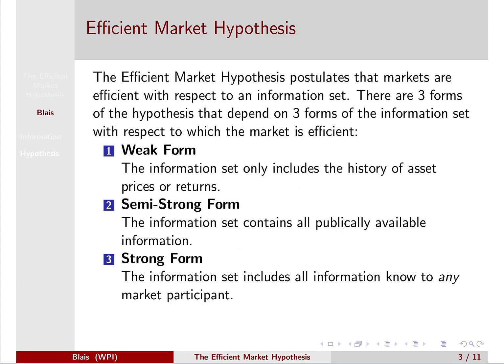The semi-strong form postulates that the market is efficient with respect to the information set that contains all publicly available information. So anything in the news, anything that you can find on the internet, anything that you can find on Bloomberg or on Yahoo Finance — all of this information the market is efficient with respect to, meaning all of that information is priced in.